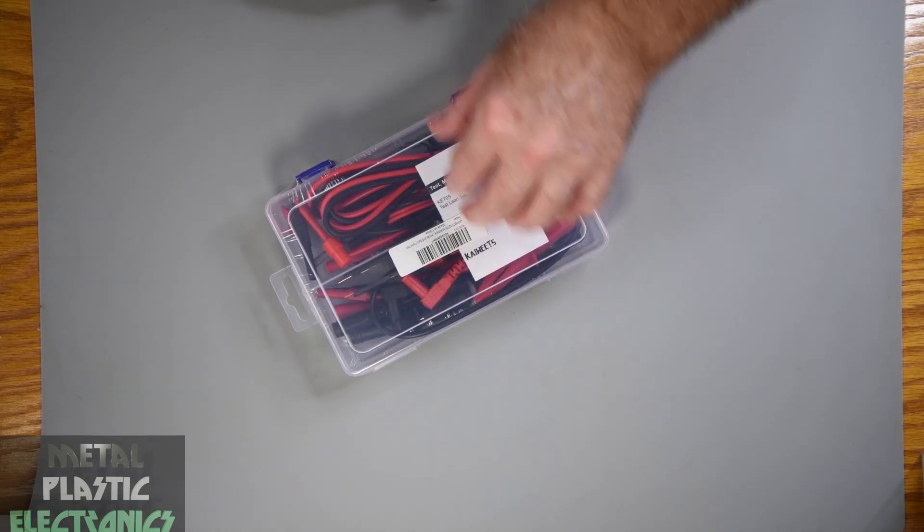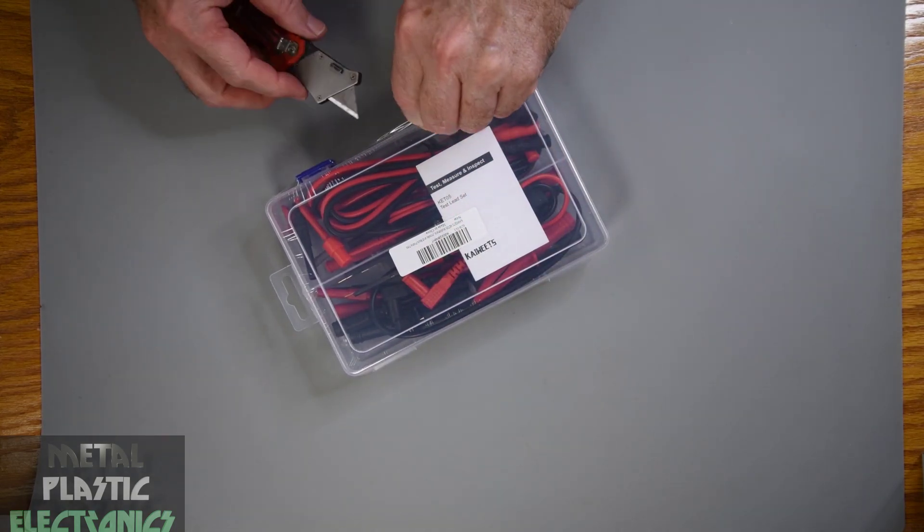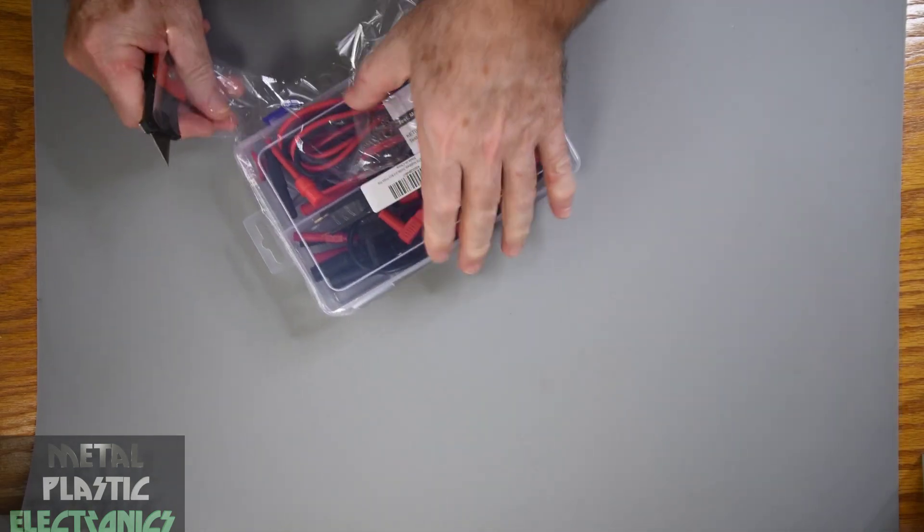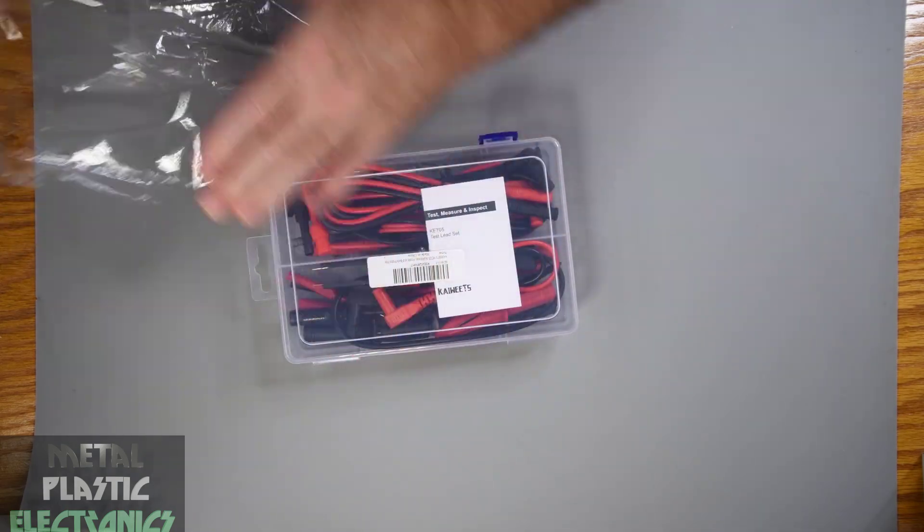Their biggest lead kit. 23 pieces of wires, clips, and proby things. $43. Pretty cheap as a test lead kit goes. So let's see how many corners were cut.